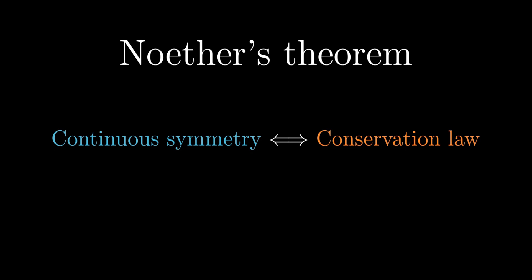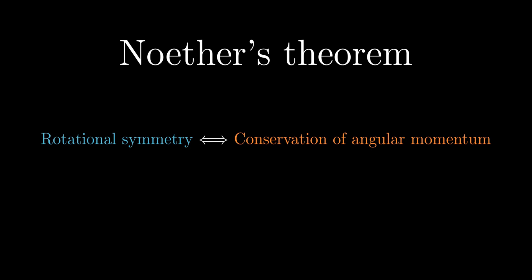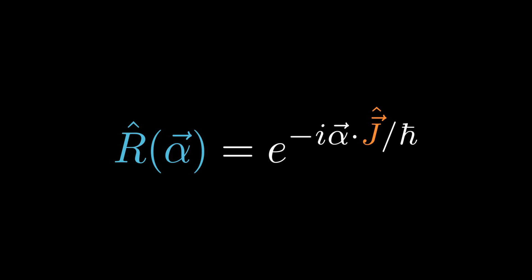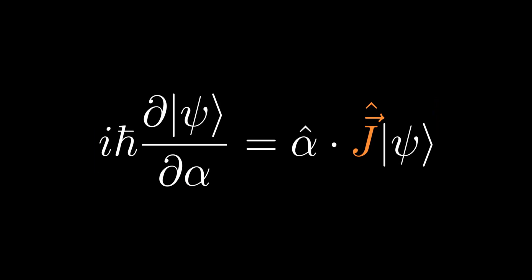By analogy, provided there is no external torque, angular momentum is conserved under rotation. Thus we associate angular momentum with rotational symmetry and define angular momentum as the generator of rotation. The rotation operator can therefore be written as R of alpha equals e to the minus i alpha dot J over h-bar, where alpha's direction is the axis of rotation and its magnitude is the angle of rotation. Note that the hat on alpha denotes a unit vector, not an operator. When the angular momentum operator acts on a state, it gives the rate of change as we rotate the system.